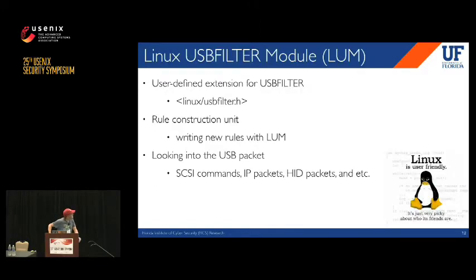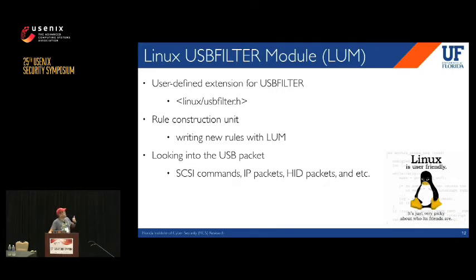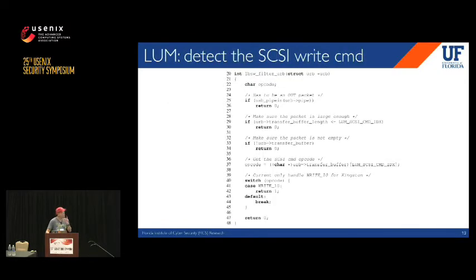A Linux USB Filter Module is a user-defined extension for USB Filter. To write a LUM, you include a header file and write a kernel module. It is a rule construction unit — once the LUM is plugged into USB Filter, you can write new rules using it. Essentially, a LUM looks into USB packets which may encapsulate other packets like SCSI commands, IP packets, or HID packets such as keystrokes. Here we show a simple LUM to detect a SCSI write command. SCSI is the protocol used by most USB storage devices.